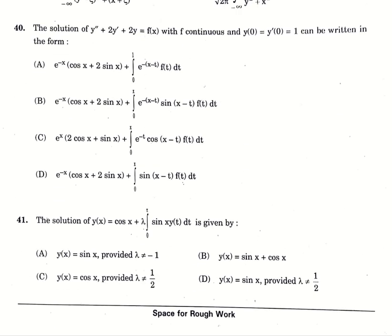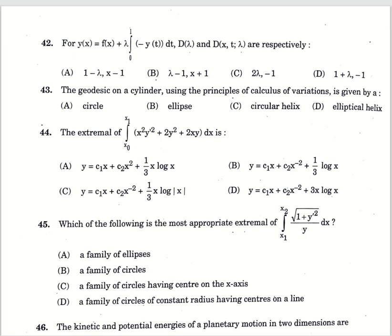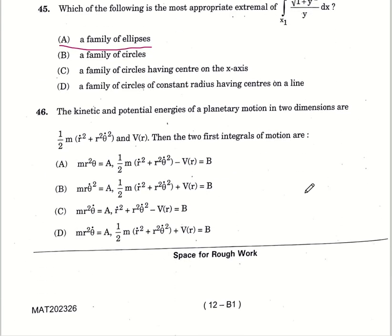Forty, the solution of given PDE with F continuous and Y of 0 equals Y dash of 0 equals 1 can be written in the form of option number B. Forty-first, solution of Y of X equals cos X plus lambda integral 0 to pi sin X Y of t dt is given by option number D. Forty-second, for Y of X equals F of X plus lambda integral 0 to 1 minus Y of t dt, d lambda and d X t lambda respectively, option A, 1 minus lambda X minus 1. Forty-third, the geodesic on a cylinder is circular helix, option C. Forty-four, the extremal of the given integral is option number B. Forty-fifth, which of the following is most appropriate extremal of given integral? Option number A, family of ellipses. Forty-six, kinetic and potential energies of a planetary motion in two dimensions are option number A.